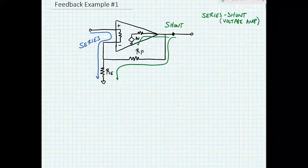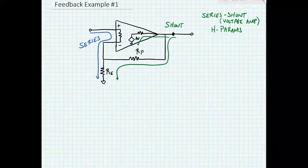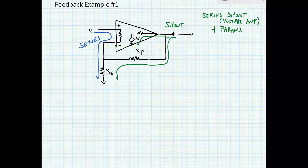When we're solving for the voltage amplifier we're going to use our hybrid parameters, our H-params. First let's go ahead and calculate H11 and H22, which are the feedback loading, and then we'll calculate H12, which is beta.